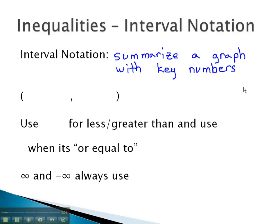The way we summarize the graph with key numbers is we put in some type of parentheses, the low number first, comma, the high number. Interval notation will always be read from left to right: low, comma, high.